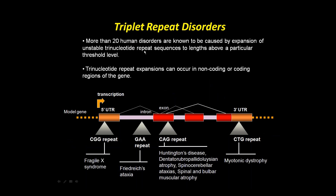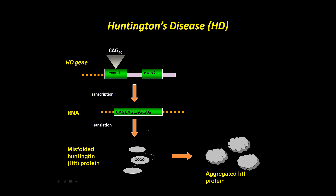Huntington's disease is part of a large family of triplet repeat disorders — more than 20 disorders caused by expansions of unstable trinucleotide repeats. In HD, it's a CAG repeat in an exon, so it gets transcribed and translated into a protein. Several other CAG repeat disorders also exist. Friedrich's ataxia is caused by a different triplet repeat — a GAA repeat in an intron — which results in gene repression. HDAC inhibitors are also useful for Friedrich's ataxia, which I'll mention at the end.